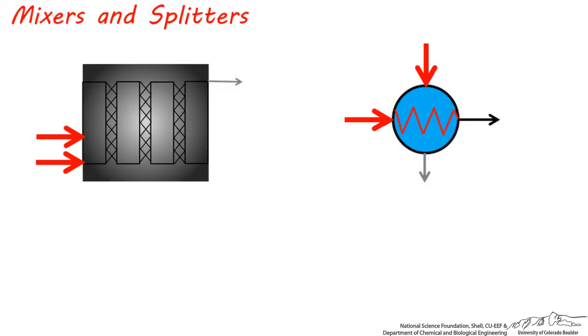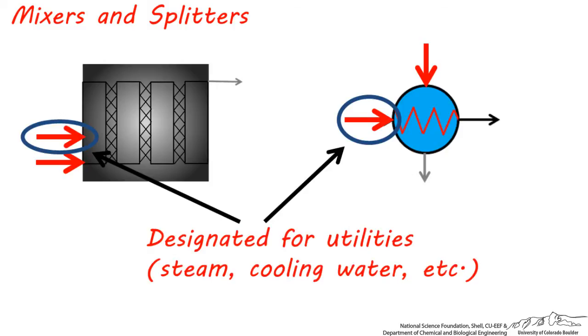Remember that if you see extra connections, like these, for some process units in your simulator, these are almost always designated for utilities, such as cooling water, steam, or any other heating or cooling media. Do not assume this means you can send another process stream into that piece of equipment.